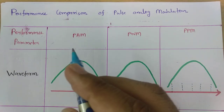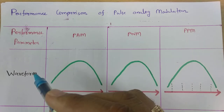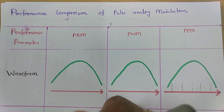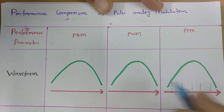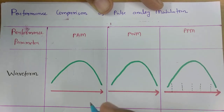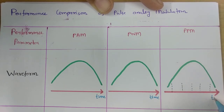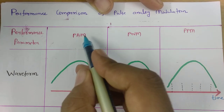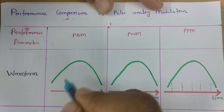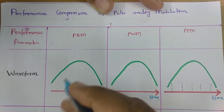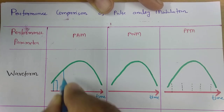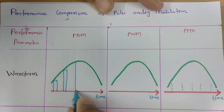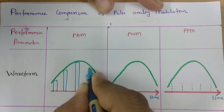Let us first understand the performance parameter with respect to waveform. Here, by this green color, I am showing the input signal for all three cases, and this is the time axis for all three cases. Now, what will be the Pulse Amplitude Modulated signal? If this is the input signal, then you will find the PAM signal that will be somewhat like this — you can observe it here.